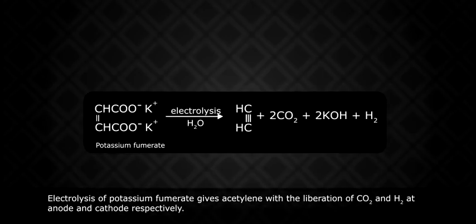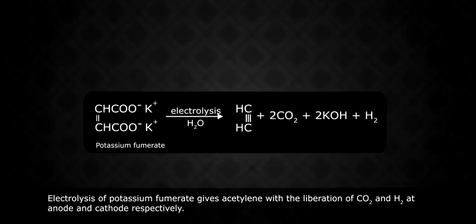Kolbe's Electrolysis: electrolysis of potassium fumarate gives acetylene with the liberation of carbon dioxide and hydrogen at the anode and cathode respectively.